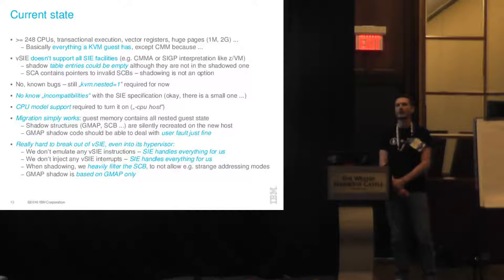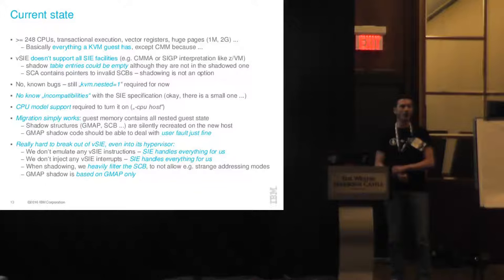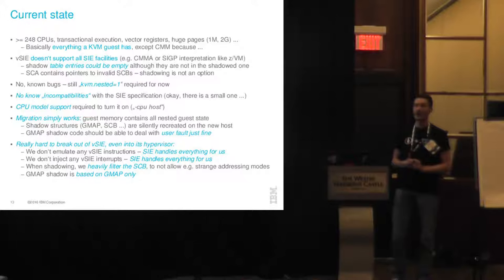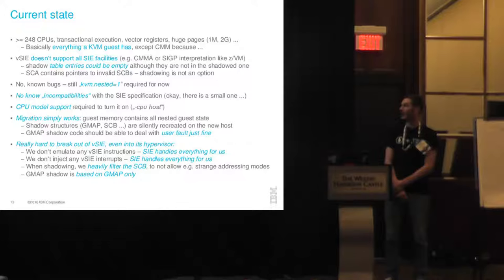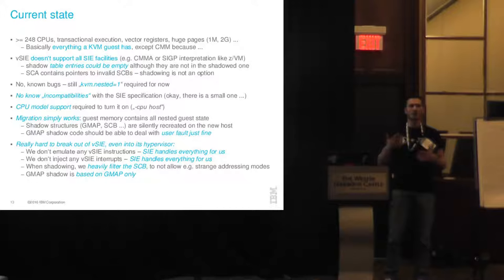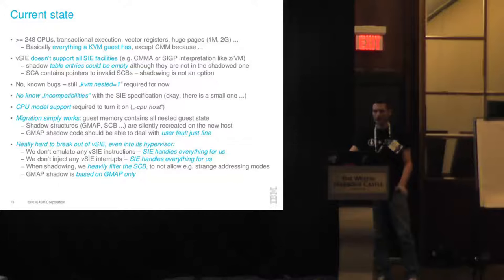When talking about security: we don't emulate any instructions for our vSIE nested KVM guests — that is all done by the hardware or by ordinary KVM code. We don't inject any interrupts into our vSIE guest either — again, this is done completely by hardware virtualization or by our KVM guest. When we shadow control blocks we only allow selected values. The shadow address space is completely based on the original address space of our KVM guest, so there isn't much that can break as long as we properly flush TLBs — which we've debugged carefully, so it's pretty stable.